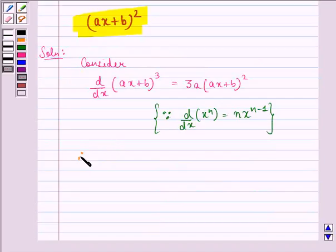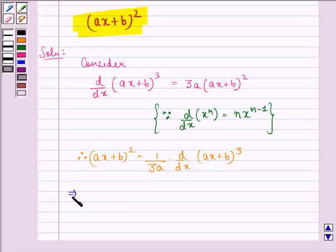Therefore, ax plus b, the whole square, will be equal to 1 by 3a into d by dx of ax plus b, the whole cube. This implies that ax plus b, the whole square, is equal to d by dx of 1 by 3a into ax plus b, the whole cube.